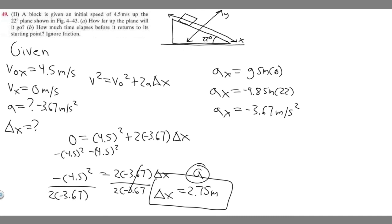Now for Part B: how much time elapses before it returns to its starting point? The block goes 2.75 meters up and then comes back down. Since this is a frictionless plane, the time going up equals the time coming back down. So if we find the time to reach the highest point and multiply by 2, we get the total time.